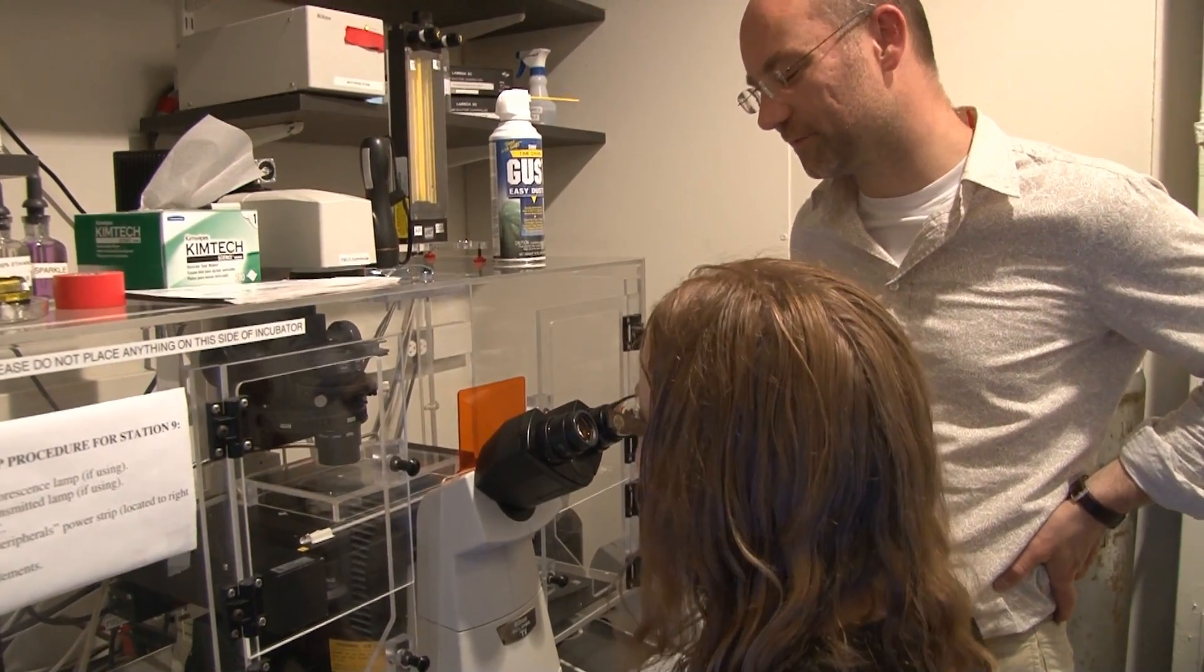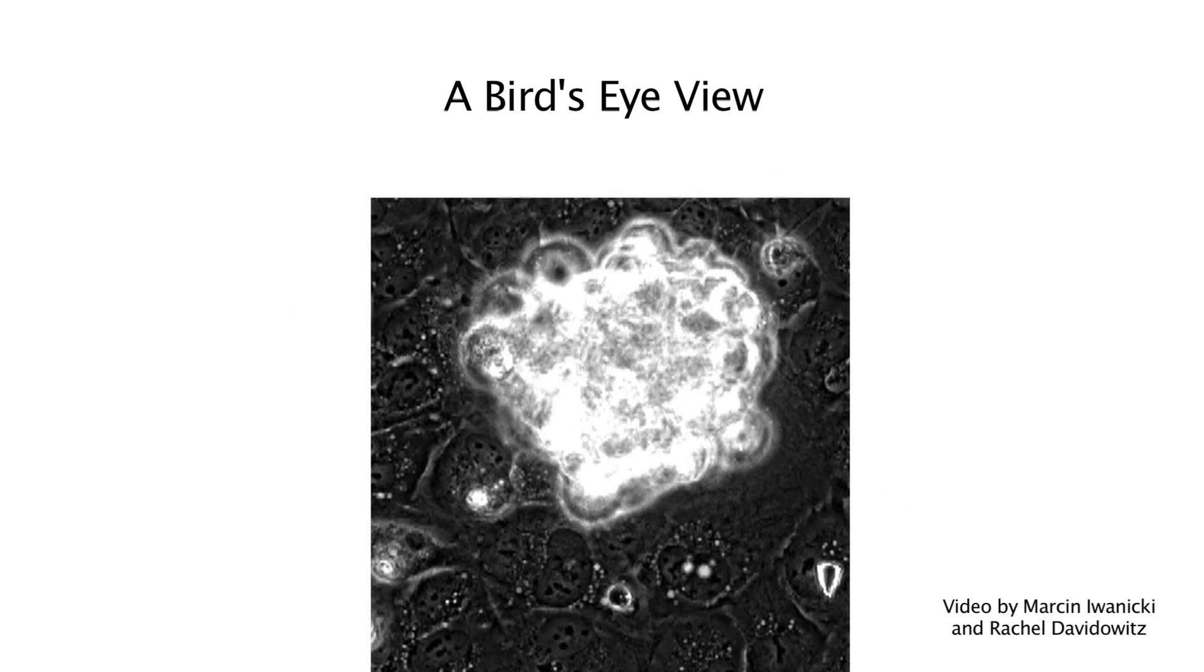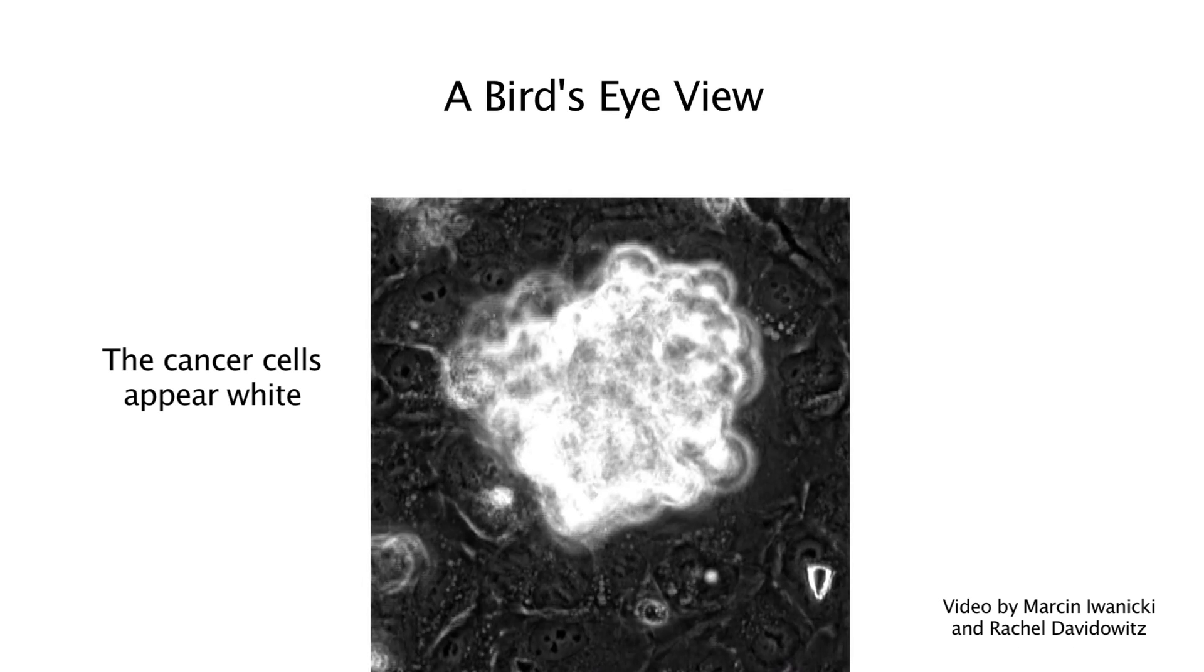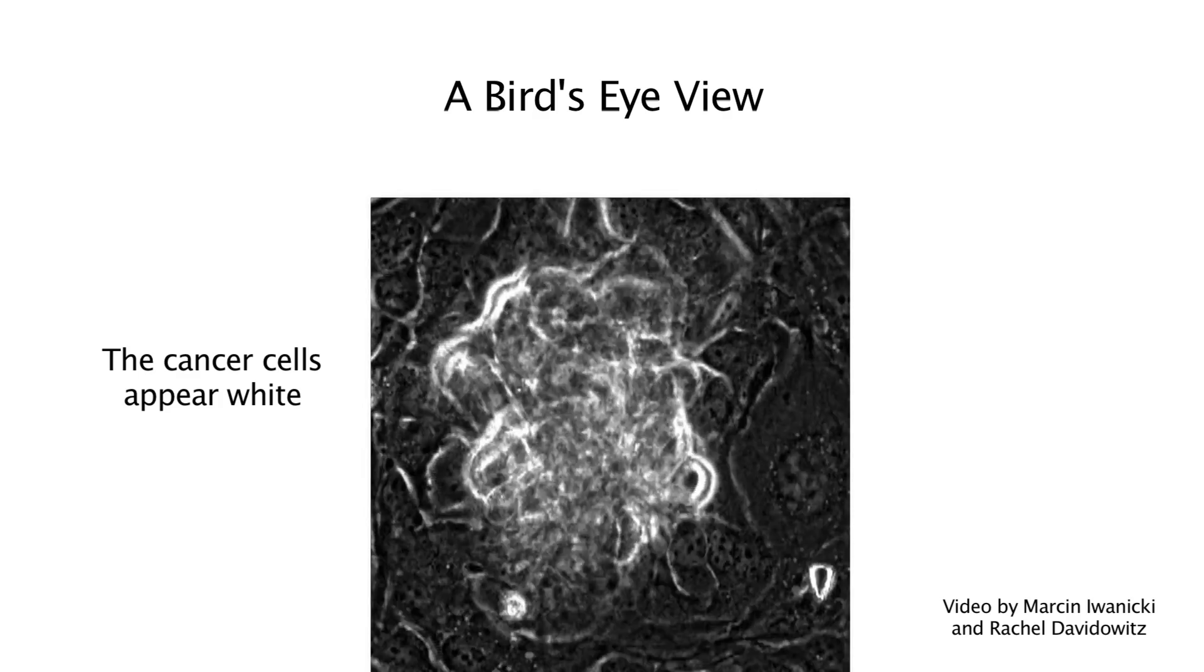First, they constructed a model of the mesothelium in a dish. When they added ovarian cancer cells, the deviants behaved as they would in the body. Here's a bird's eye view of a cluster of ovarian cancer cells sitting on a layer of mesothelial cells. The cancer cells form a hole in the mesothelial cell layer as the invasion proceeds.